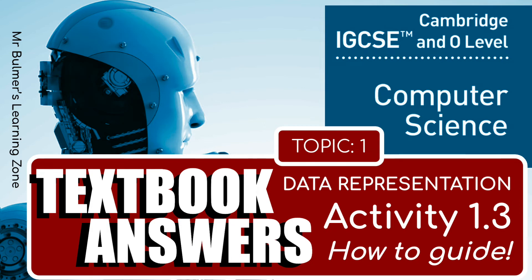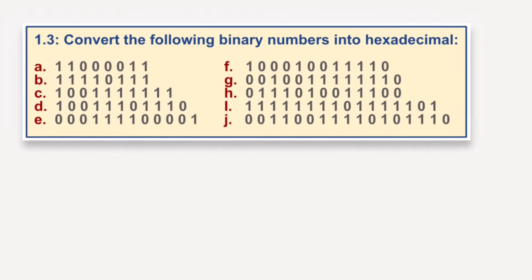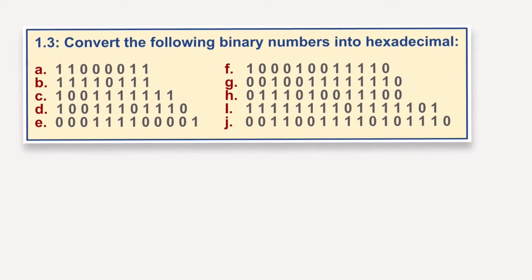Okay, so I'm going to start activity 1.3, and we're going to be looking at converting the following binary numbers into hexadecimal. As you can see, we have these range in size massively, but trust me, this is really, really easy.